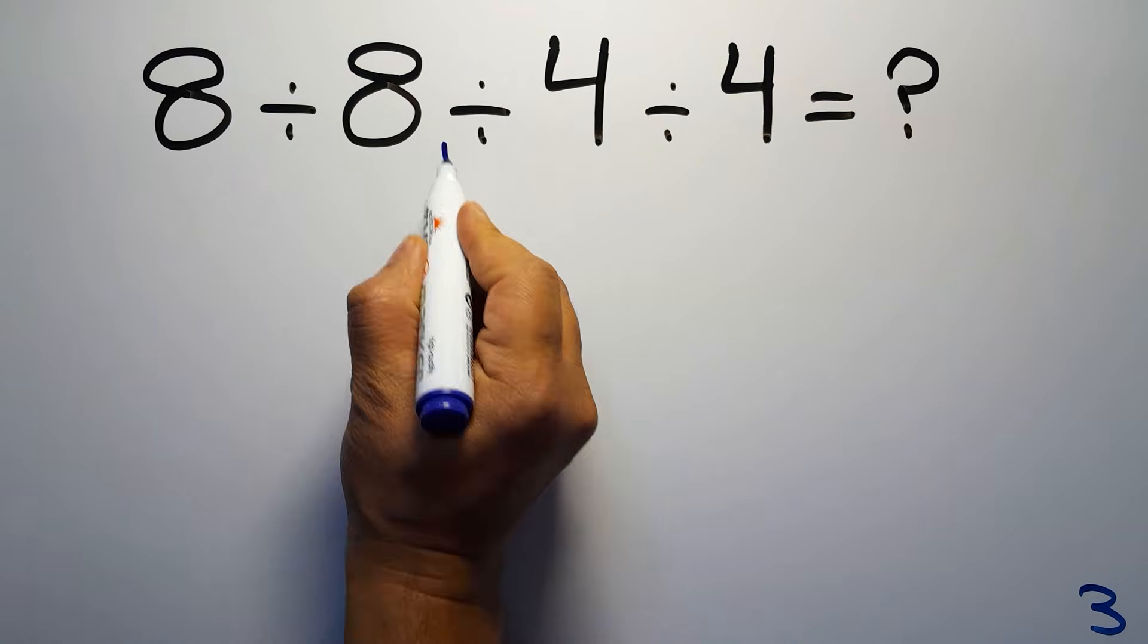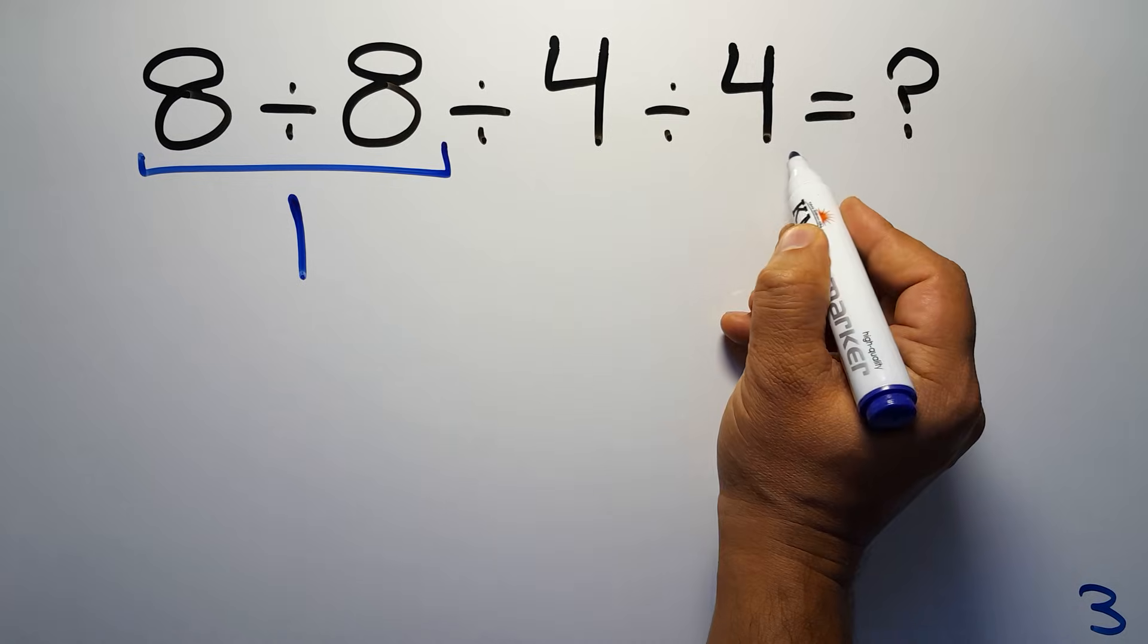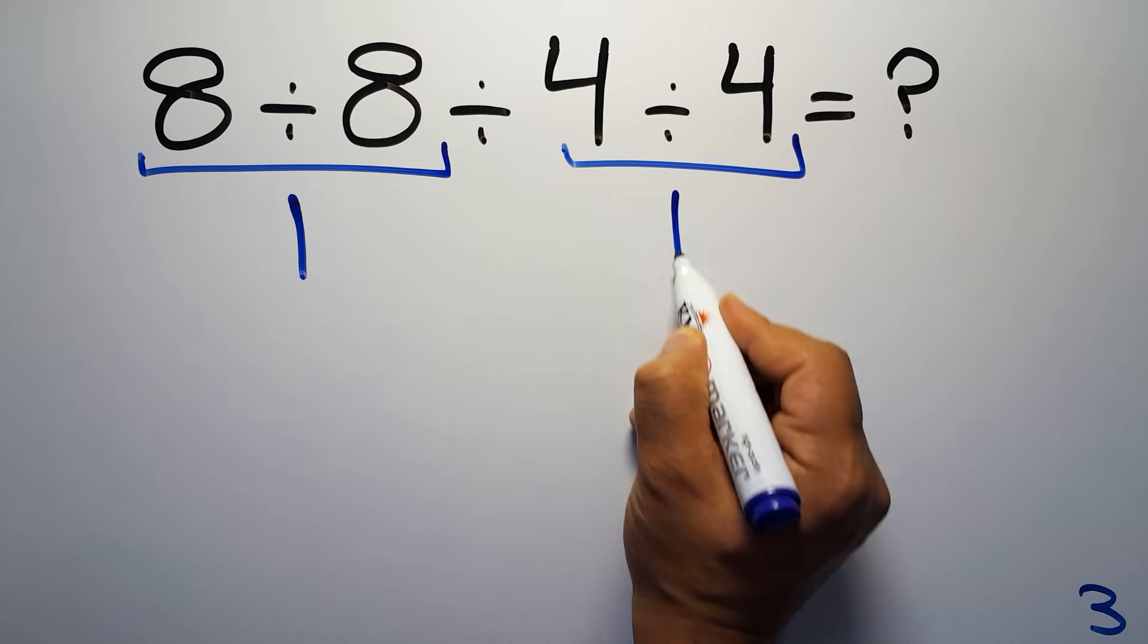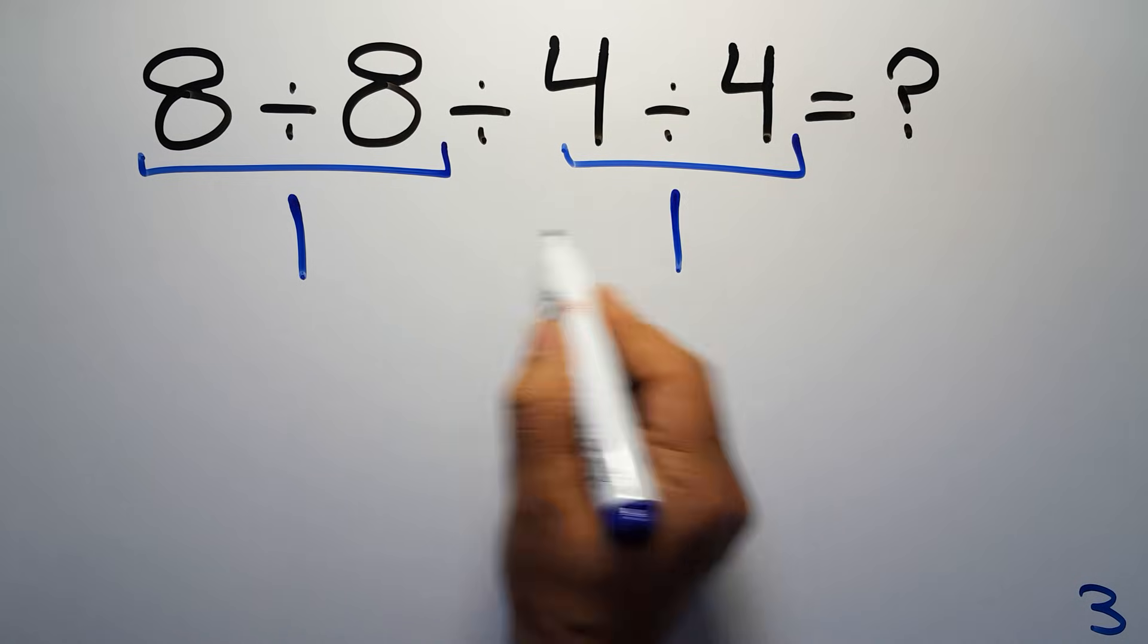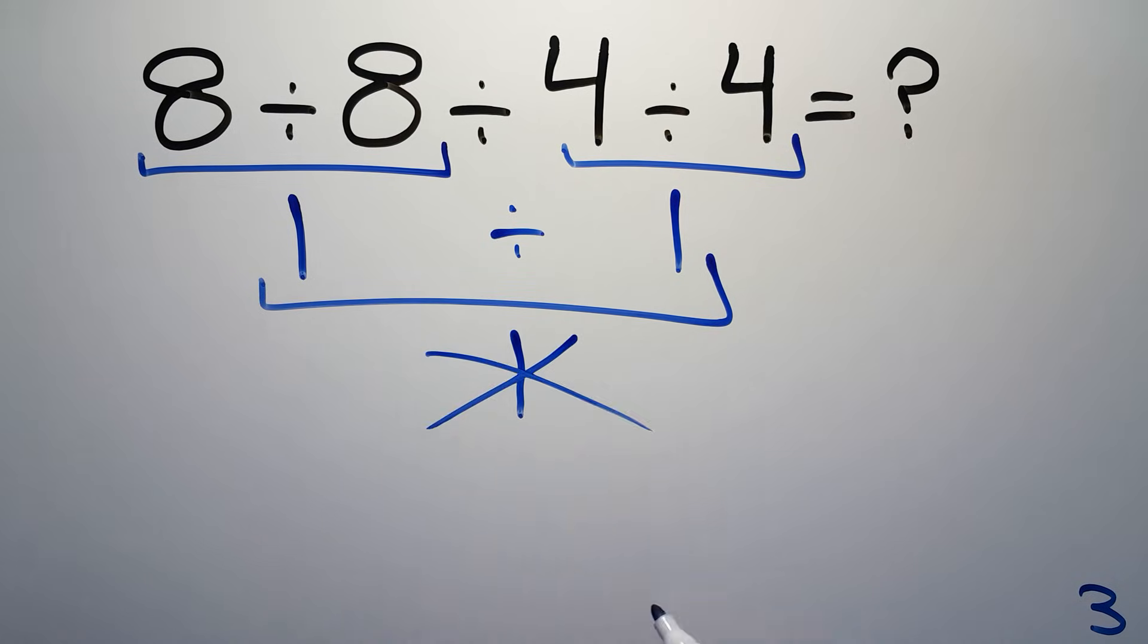8 divided by 8 gives us 1, and here we have 4 divided by 4 which equals 1, so 1 divided by 1 is just 1. But this answer is not correct because according to the order of operations, when we have more than one division in an expression, we have to work from left to right.